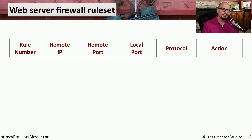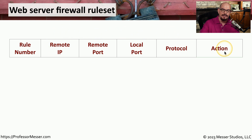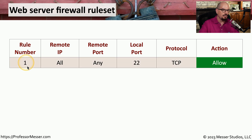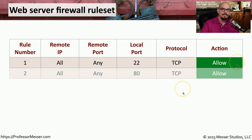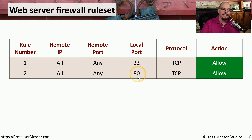Let's look at a list of firewall rules and understand what might be allowed or blocked through this particular firewall. This rule base has a simple set of parameters: the rule number, a remote IP address, a remote port number, a local port number, a protocol, and an action. The first rule accepts all traffic from any remote IP address and port destined for local port 22 using TCP — that's SSH — and any inbound SSH traffic is allowed. The next rule allows traffic from all remote IP addresses to local port 80, which is HTTP, and that traffic is also allowed. Rule 3 allows traffic to local port 443, which is HTTPS, also allowed.